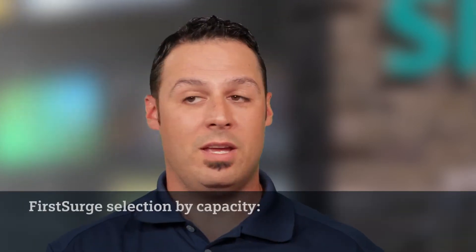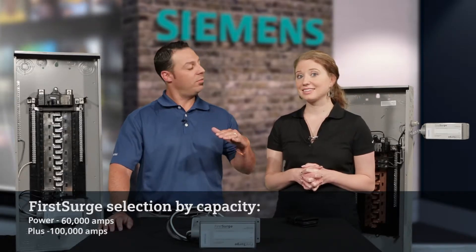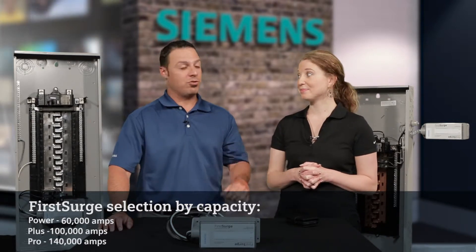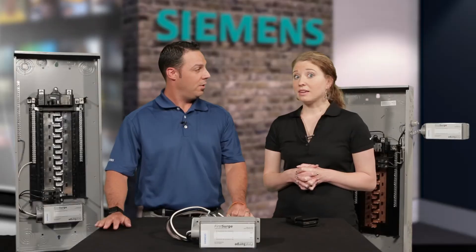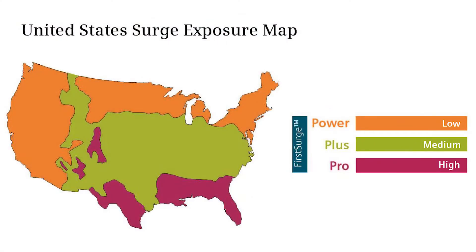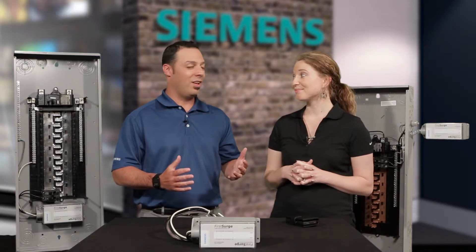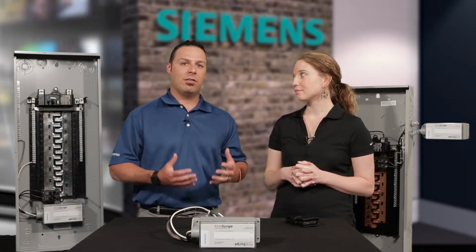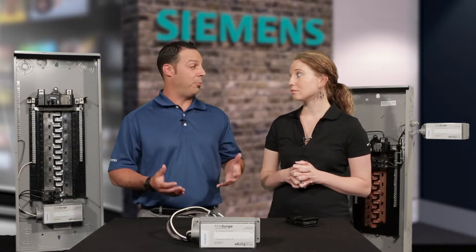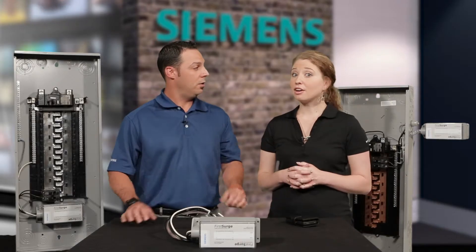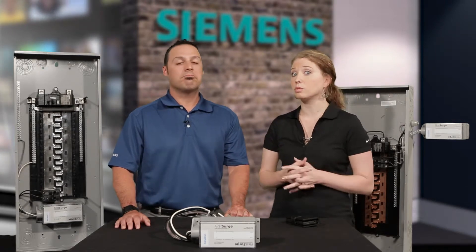Reading some of the literature, I understand you have three options: you have the Power, you have the Plus, and then you have the Pro. Do I really need all of those options? If you take a look at the map of the U.S., you'll see that Florida and the Gulf area really has the most storm activity. They're going to need a more robust feature than other areas in the country that don't have as many storms. I live in the Northeast — Boston in particular — so we don't get a lot of that Gulf Coast, Florida-type storm activity. It sounds like because of the appliances and smart technology I have in my home, the Plus option may be most suitable for me. Yeah, you don't have as many storms, but you have a lot of smart technology that you want to protect.